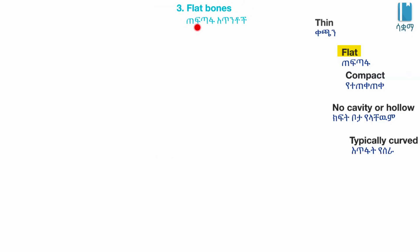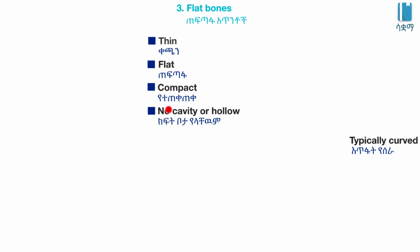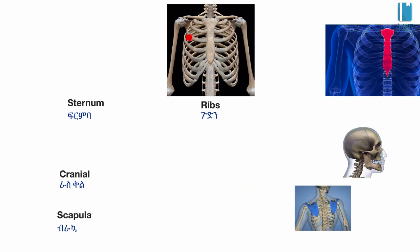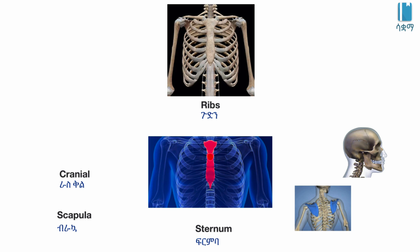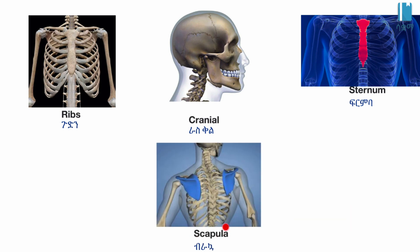Flat bones are thin, flat, and compact. They have no cavity or hollow space, and they are typically curved. Examples of flat bones include the ribs, sternum, cranial bones, and scapula.